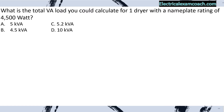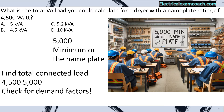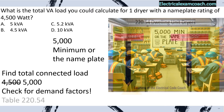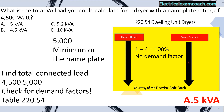What is the total VA load you would calculate for one dryer with a nameplate rating of 4,500 watts? First, we find the total connected load. We know that we have to use a 5,000 VA minimum or the nameplate, whichever is greater — so the 4,500 is out and the 5,000 remains. We then check for demand factors in table 220.54, and find that one through four dryers is at 100%, meaning there is no demand factor. Answer: A.